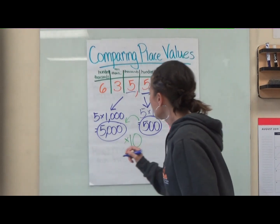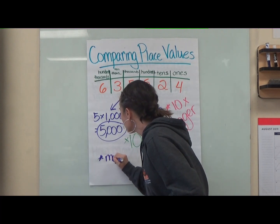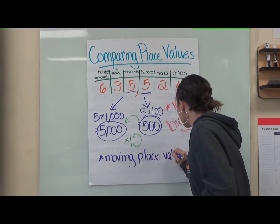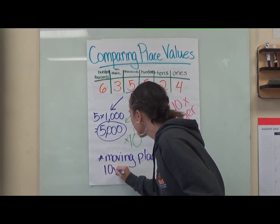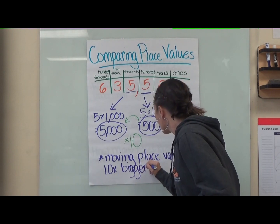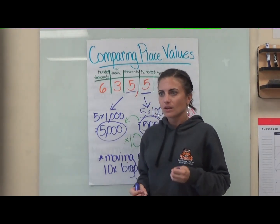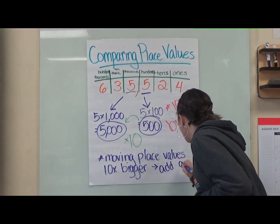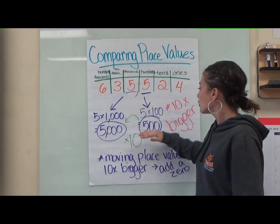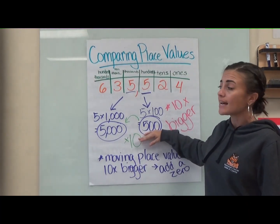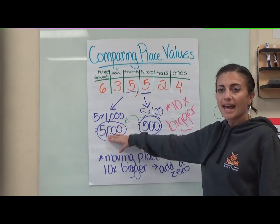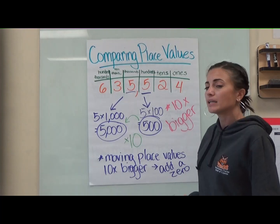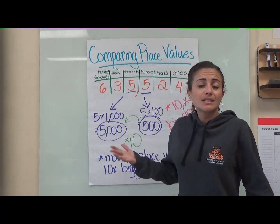That's going to make it ten times bigger to get from this number to this number — I've got to multiply five hundred times ten to get to five thousand. When you are moving place values ten times bigger, that's when we're going to add a zero. If we're making it ten times bigger, we're adding a zero. Notice how my five hundred has two zeros — if it's ten times bigger in the thousands place, it now has three zeros. And if we were to have a five in the ten-thousands place, it would have four zeros. So check those zeros to make sure your numbers make sense and to check if it's ten times bigger.